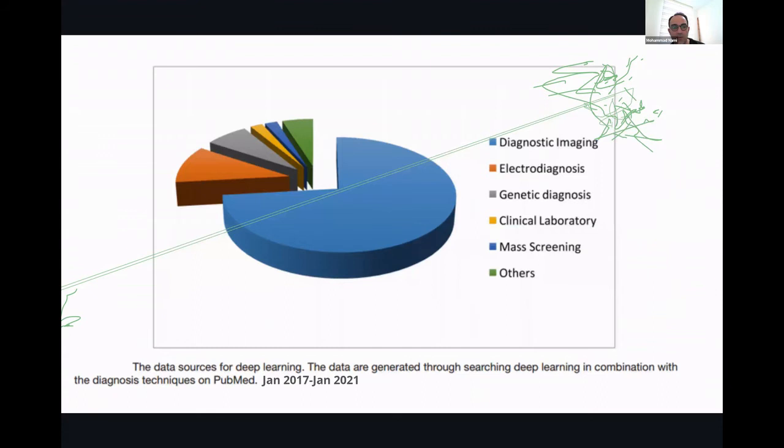If we are using these kinds of data sets as platforms to do data mining, artificial intelligence research, and application of machine learning, we can see that diagnostic imaging and image processing has been one of the main interests of scientists for the past four years to apply AI in medical research. Then it follows electrodiagnostics, genetic tests, clinical laboratory, and mass screening.